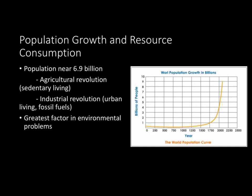Population growth and resource consumption. Currently, the population of the world is somewhere near the 6.9 billion mark. In environmental science, there are two important times in population trends to look at. First, the agricultural revolution, when people ceased to be nomadic and instead settled down and started farming. Another important area is the industrial revolution, when people left agricultural centers and moved to urban centers where they started manufacturing and burning fossil fuels.